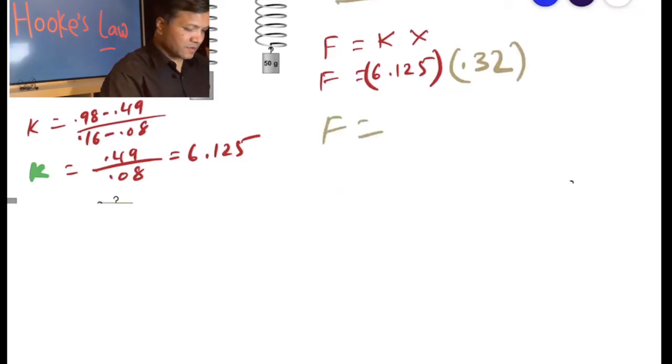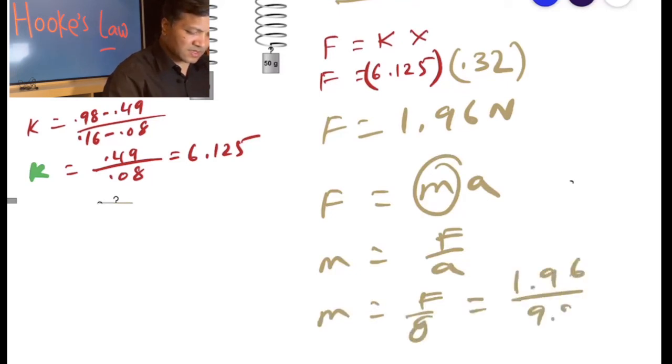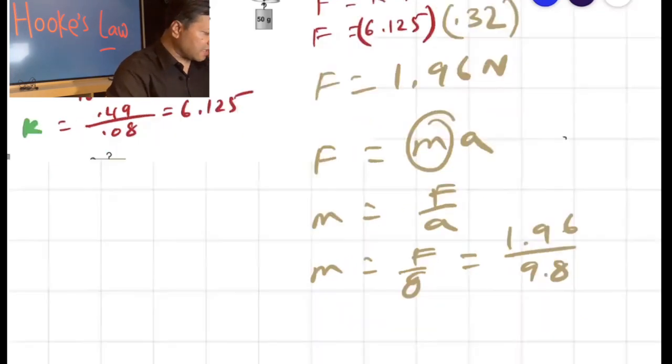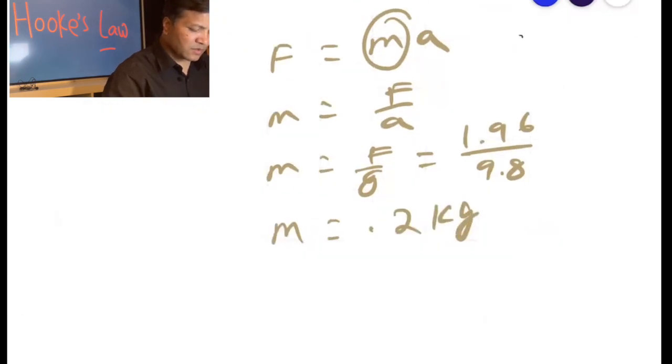So that means F is 6.125 times 0.32, which is 1.96 newtons. F equals ma, so mass is F over a. Mass is F over g, so F is 1.96, g is 9.8. Divide by 9.8, and that would be 0.2. Mass is 0.2 kilogram.